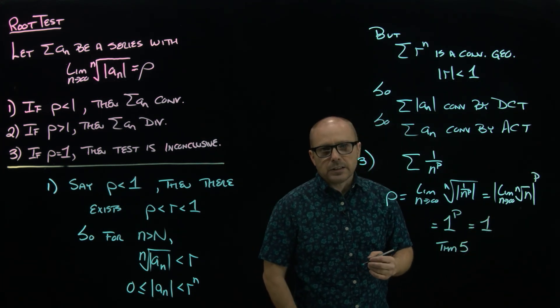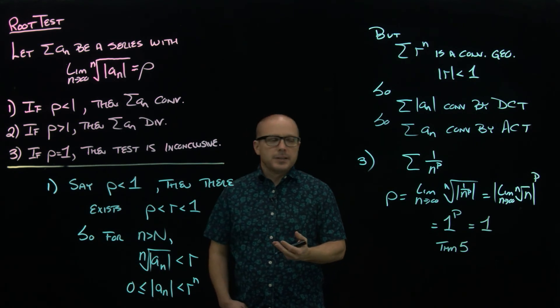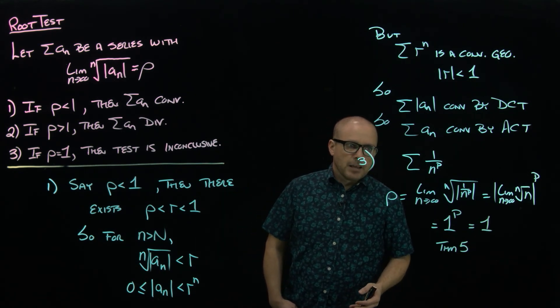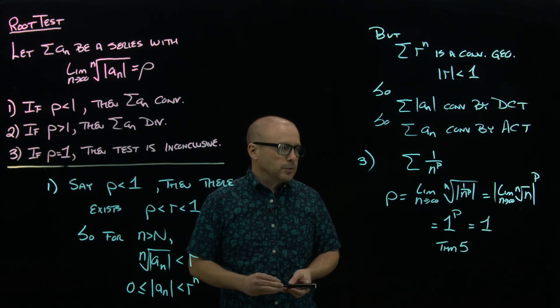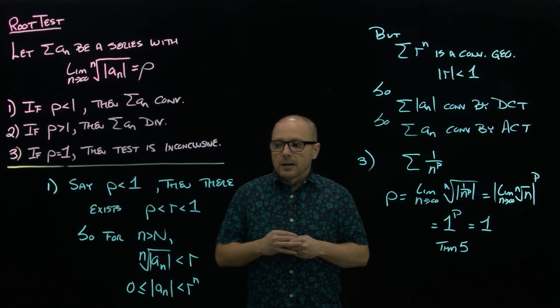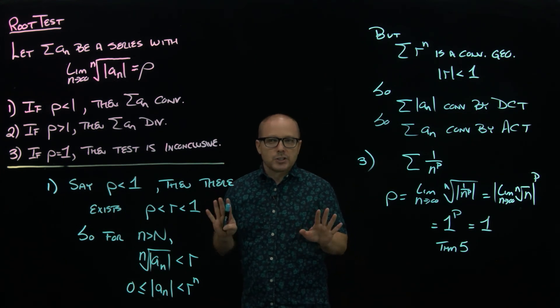So again, much like ratio, any p-series comes out to be one, and we know some p-series converge and some diverge. That's precisely why this test is inconclusive.